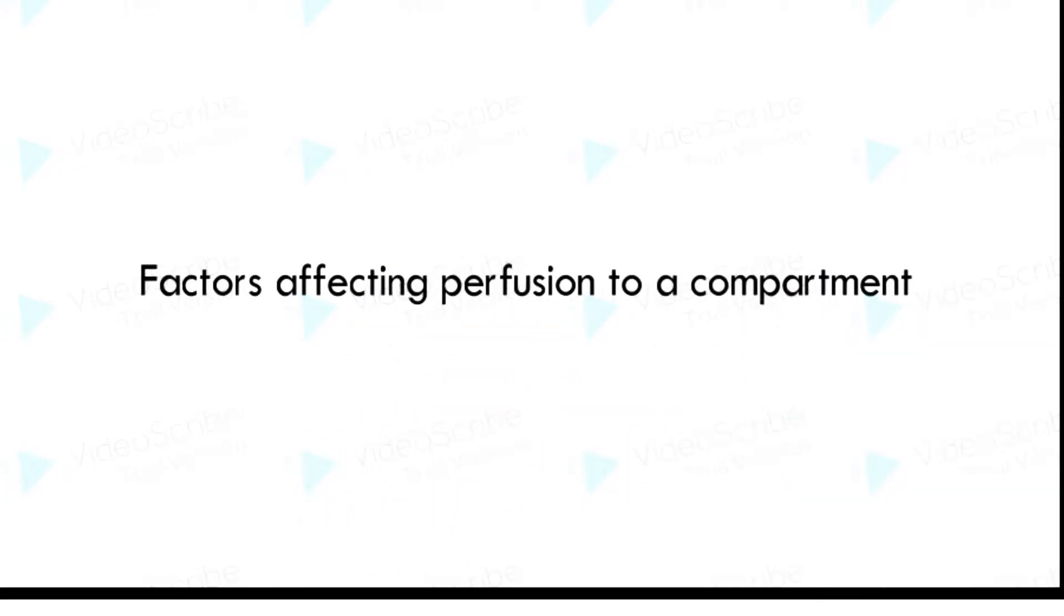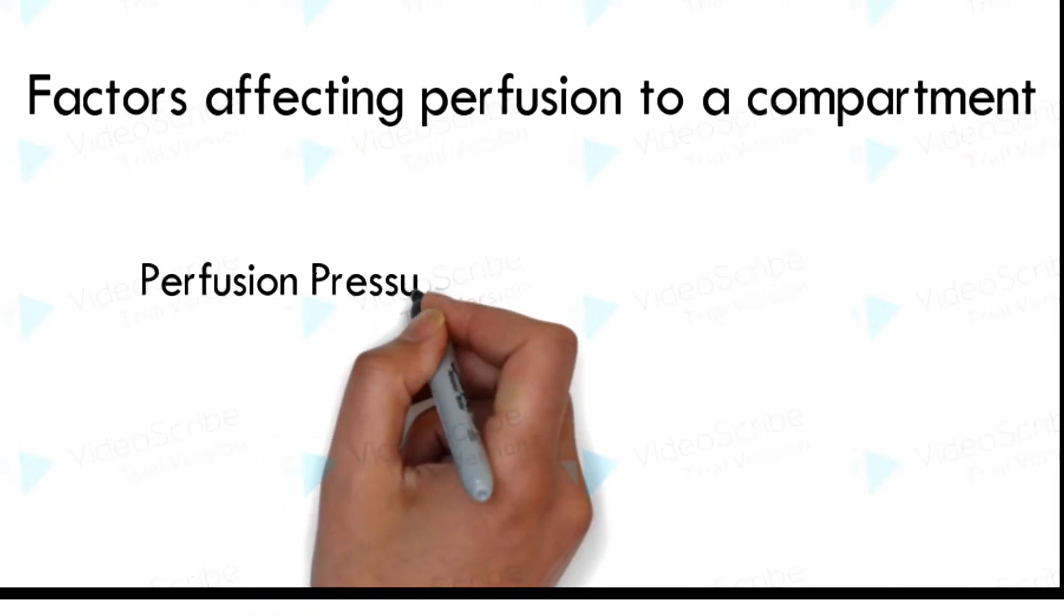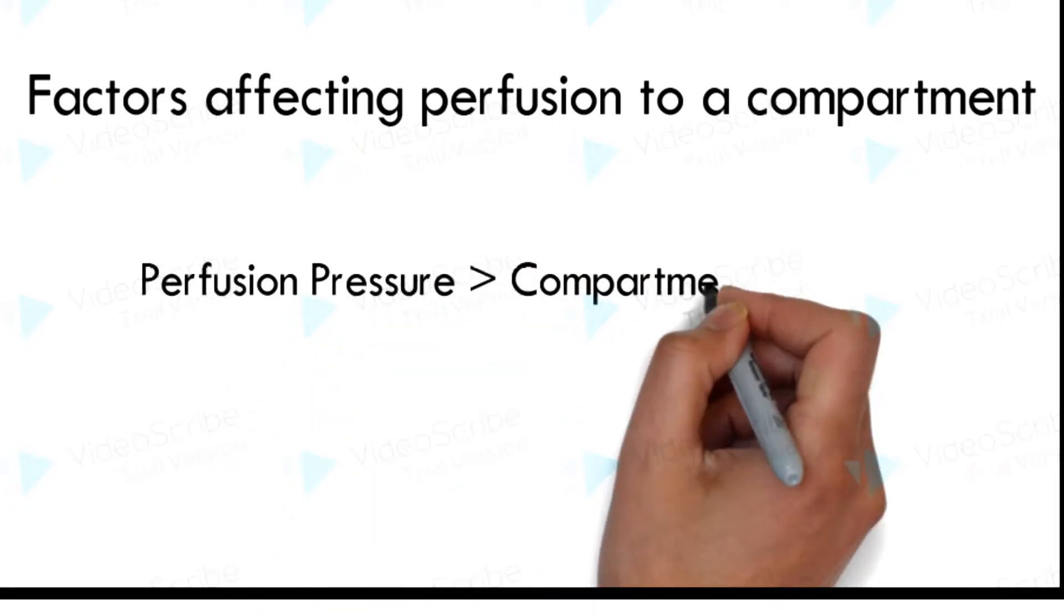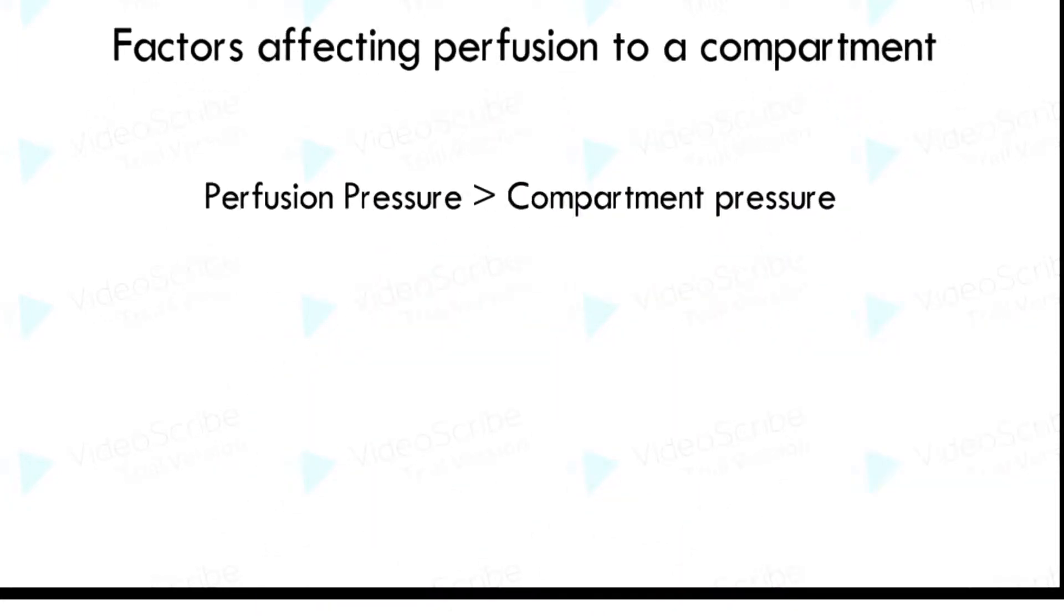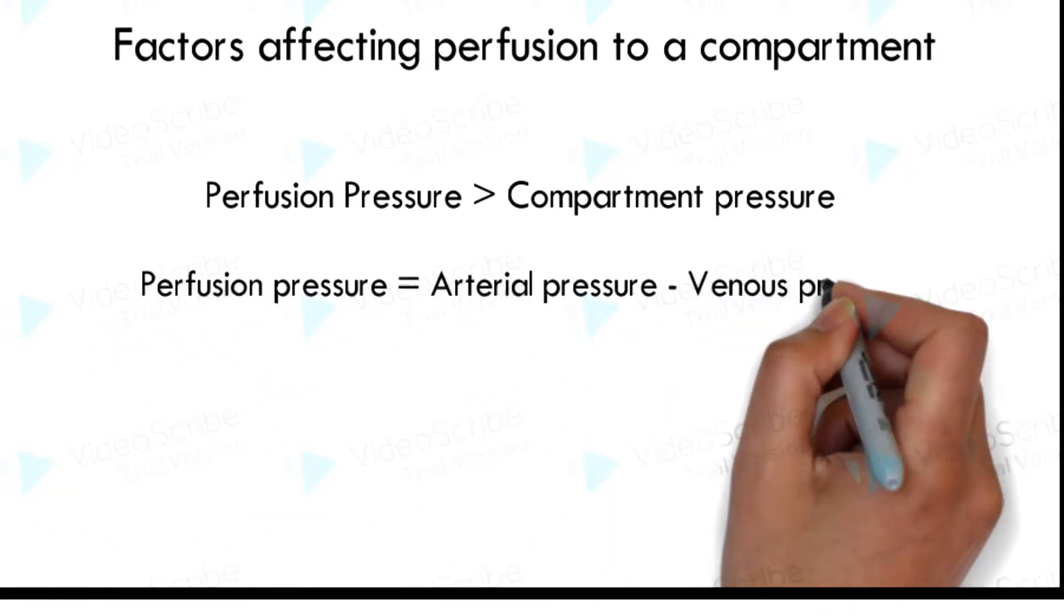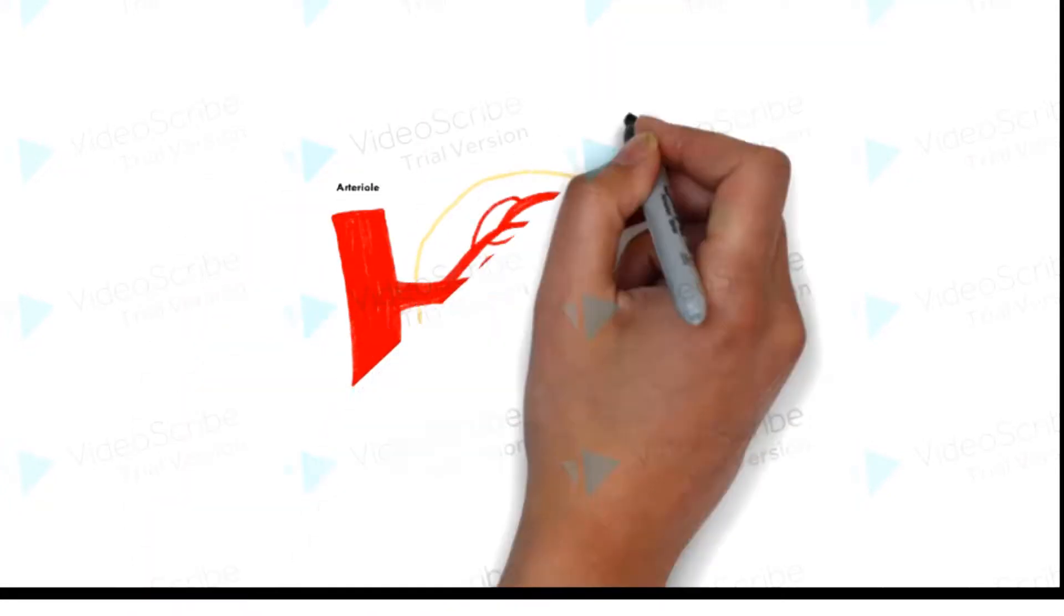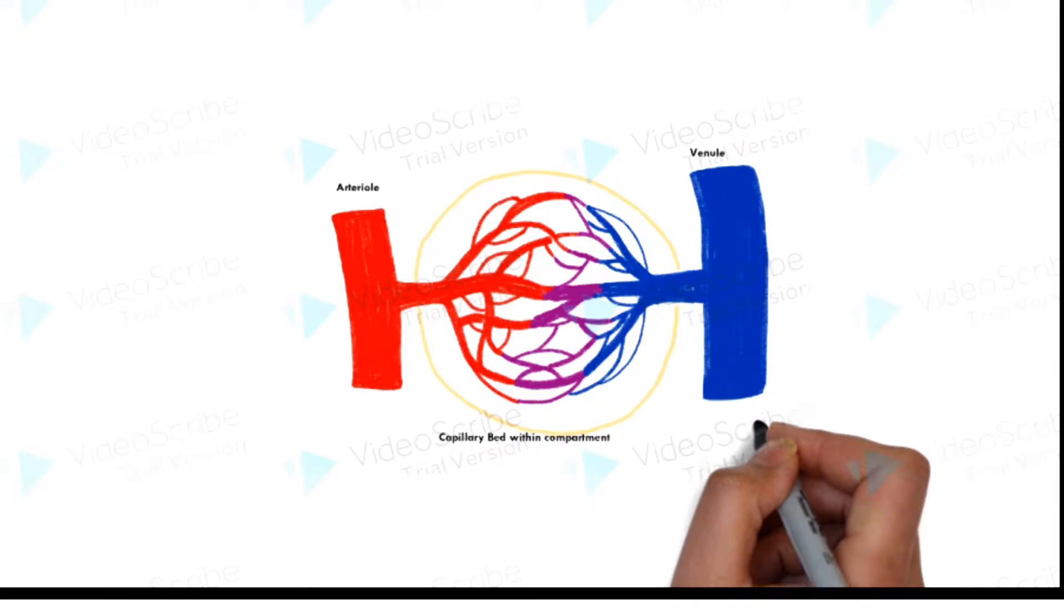Factors affecting perfusion to a compartment: In order for a compartment to be perfused, the perfusion pressure of the area needs to exceed the pressure within the compartment. The perfusion pressure is the difference between the arterial pressure supplying the compartment and the venous pressure draining the compartment. This means that blood flow to the compartment can be affected by arterial and venous pressures, as well as the pressures within the compartment.